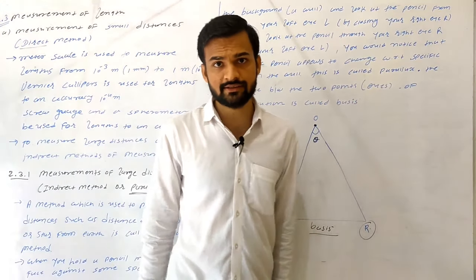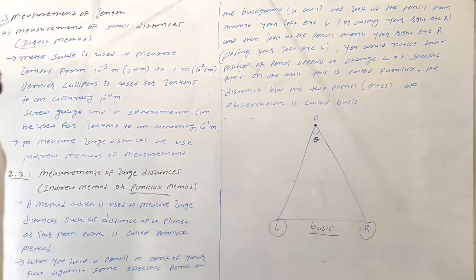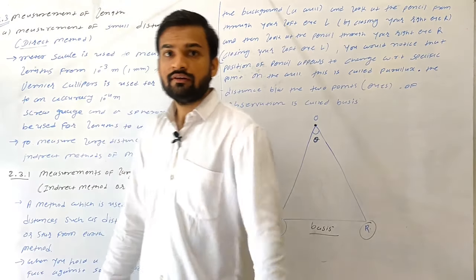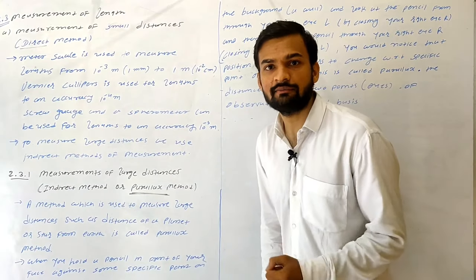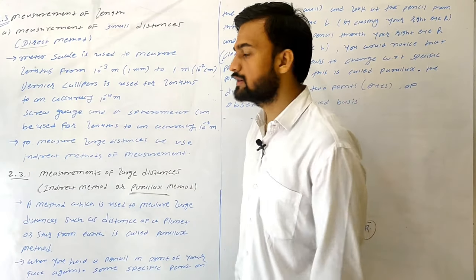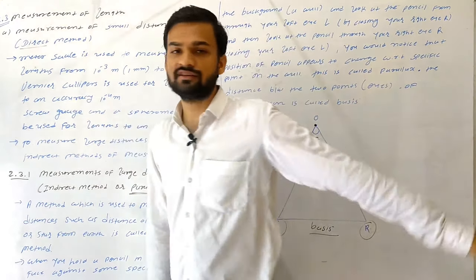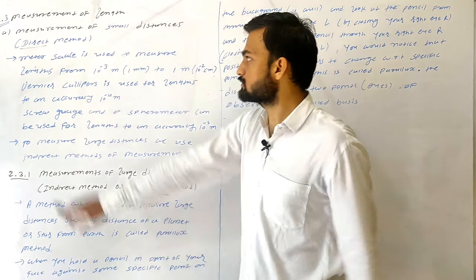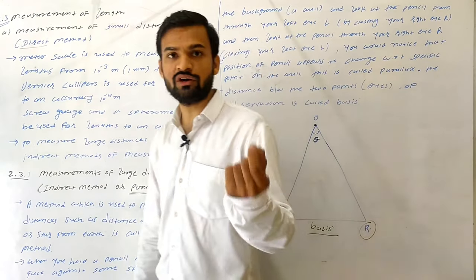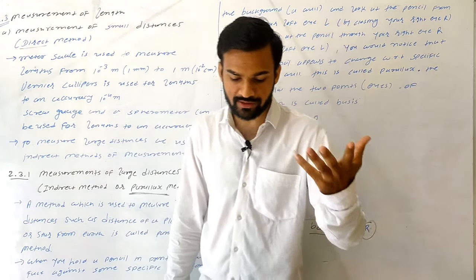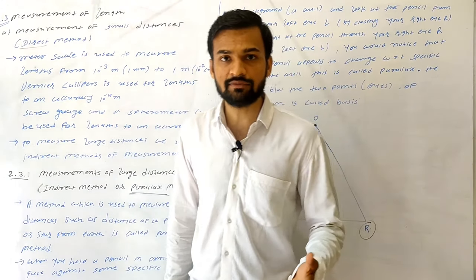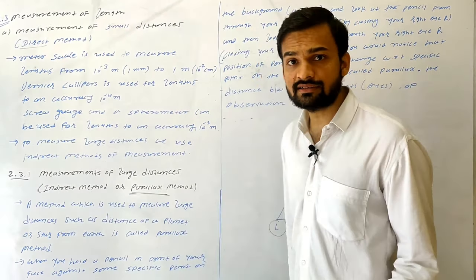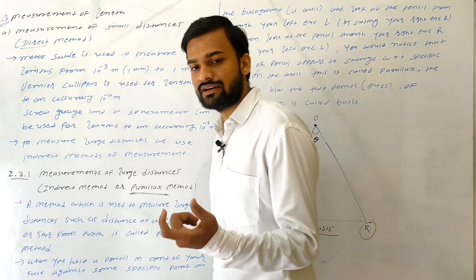Hello students, let's see section 2.3: measurement of length. We have two methods: direct method and indirect method. The direct method is used to measure small distances.